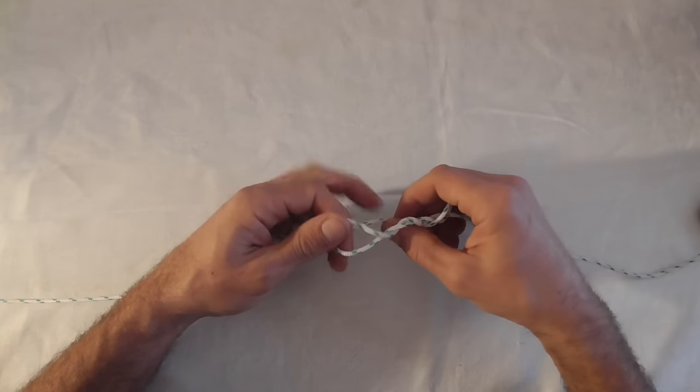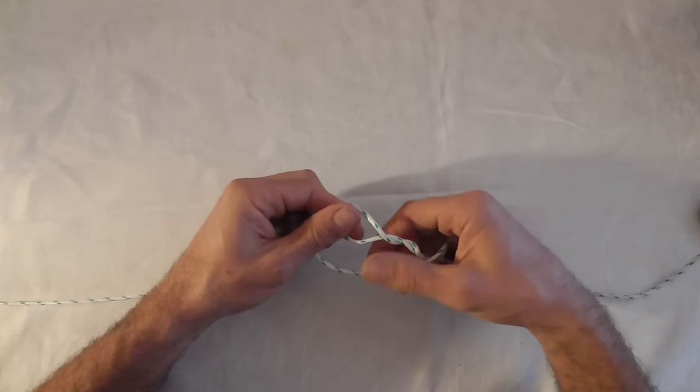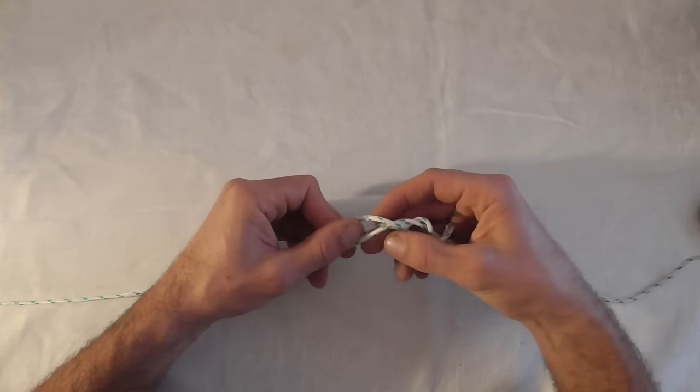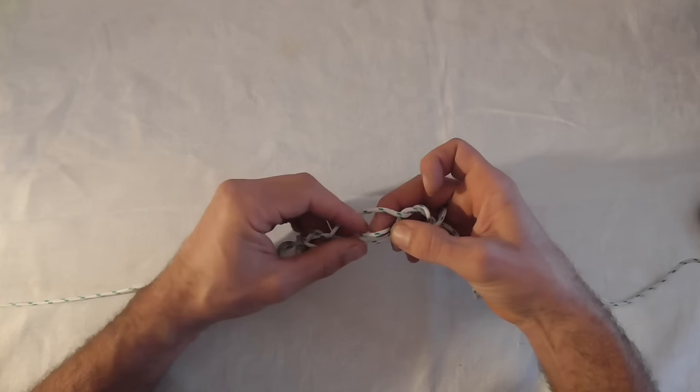Then what we're going to do is just grab that bottom loop and put it up through that eye we've created.